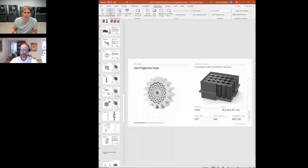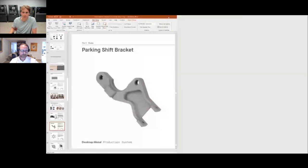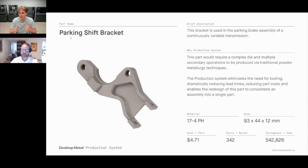Here's a good automotive example — a component of a parking brake bracket for a parking brake system, to make sure you don't roll down the hill. Printed on the Production System, it would have required a very complex die and quite a bit of secondary processing to produce features that can't be built into the die. With metal 3D printing, we simply print it. This part can be produced for just $4.71, producing over 340 of these parts per build and over 500,000 per year.